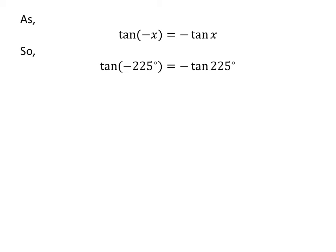Let us apply the above identity for tangent of minus 225 degrees. Here, x is 225 degrees. So, tangent of minus 225 degrees is equal to minus tangent of 225 degrees.